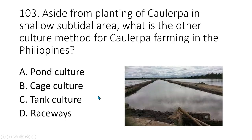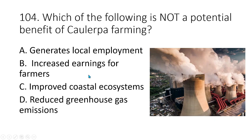Question 103. Aside from planting of Caulerpa in shallow subtidal areas, what is the other culture method for Caulerpa farming in the Philippines? A. Pan culture B. Cage culture C. Tank culture D. The use of raceways. The answer is A. Pan culture.